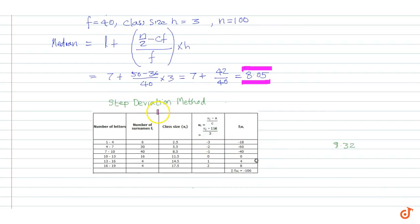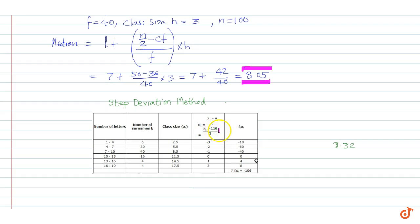Now we will calculate the mean using the step deviation method. A table can be constructed that shows the class midpoints and the step deviations. The first two columns are replicated from the given table. The class midpoint xi is the mean of each class — for example, from 1 to 4 the midpoint is 2.5, from 4 to 7 it is 5.5, and so on. We take the assumed mean as 11.5, and calculate ui using the formula: ui = (xi − 11.5) / 3, where 3 is the class size.